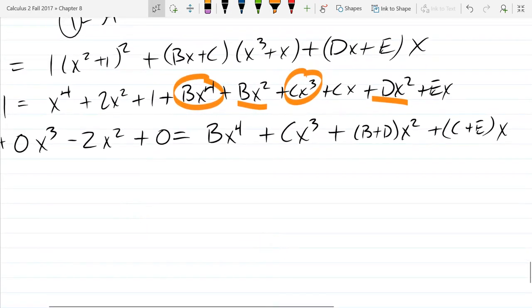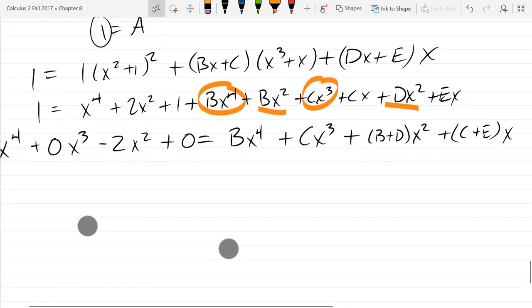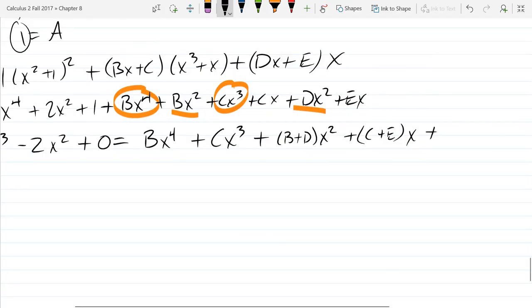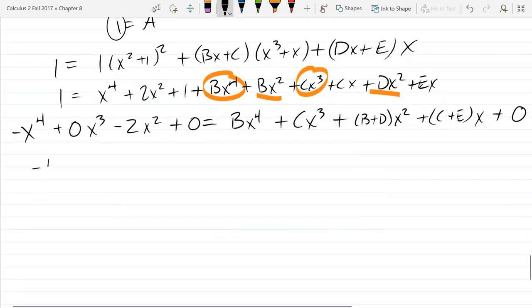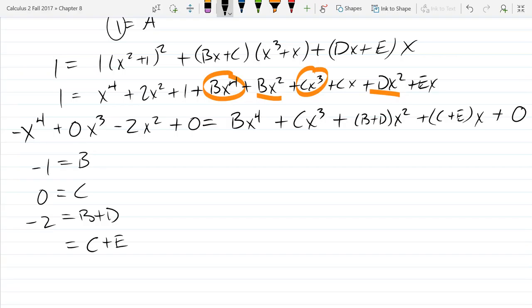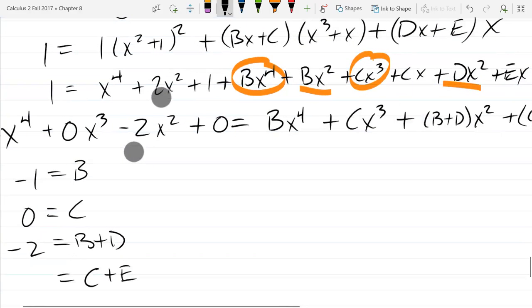All right, we just matched coefficients. There are... There's technically four terms to match. There's no constant term. So if I wanted to write constant, what would my constant term be on the right side? So it would be zero. If I wanted to write how many constants I have, I have no constants or zero constant. All right, match up. So we got negative one equals b. Zero equals c. Negative two equals b plus d. And... Uh-oh. What does c plus e equal? Oh no. It is either zero or one. Zero. Why is it zero? Because we have zero x terms on the left side. That's right. There's zero x terms.